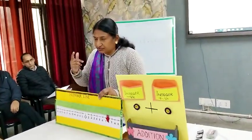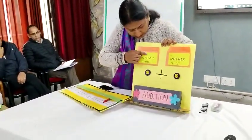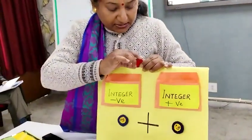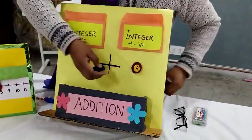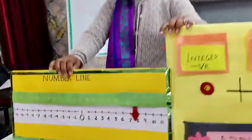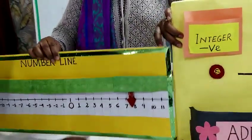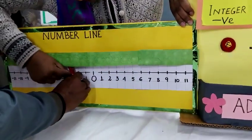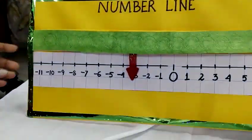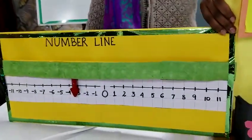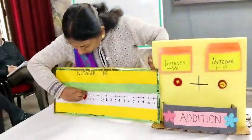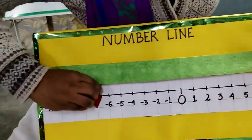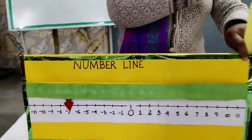Now let us add two negative integers. I randomly take minus 3 and minus 4. Start from 0 and take the pointer to minus 3. Now I need to add minus 4 — this is a decreasing value, so we move towards the left. Make 4 jumps to the left: 1, 2, 3, 4 — and we land on minus 7. In this way we have learned to add two positive integers and two negative integers.